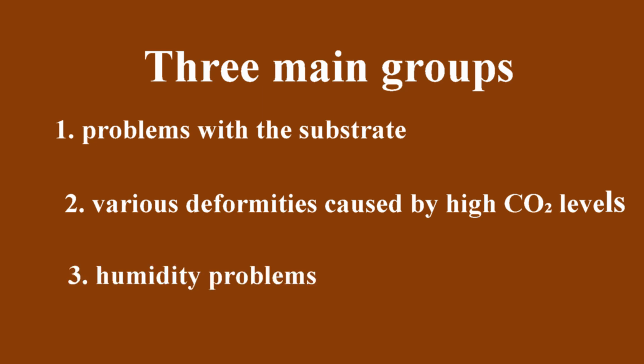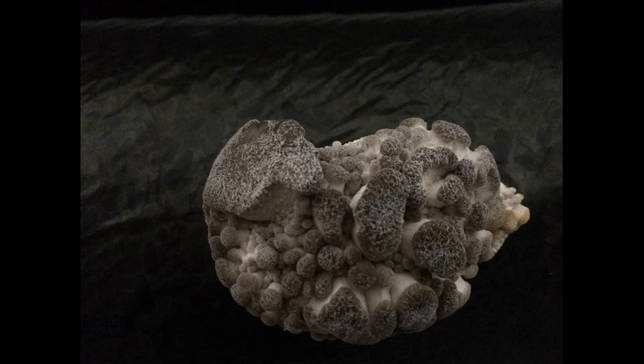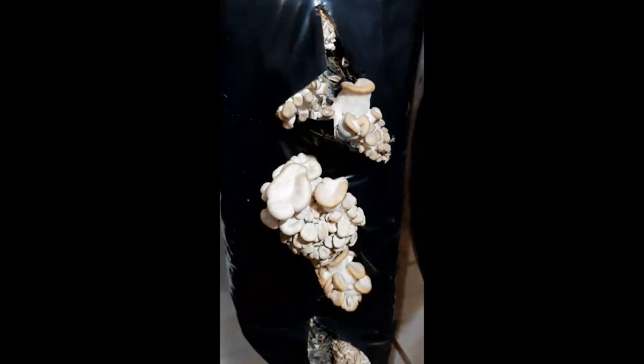The third group is about humidity problems: too much humidity, sudden changes, low humidity, or condensation. All of these things cause primordia to die and turn yellow, and make mushroom caps grow ugly and deformed.